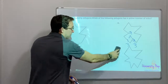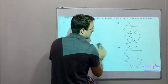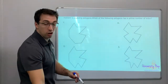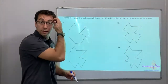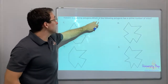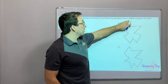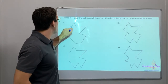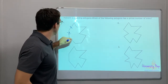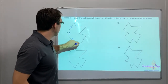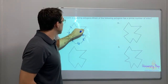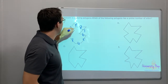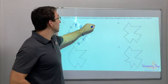Malcolm is studying polygons. Remember, a polygon is just a shape that can't have any curved sides. Which of the polygons has a prime number of sides? Let's count them: 1, 2, 3, 4, 5, 6, 7, 8, 9 — 9 sides.